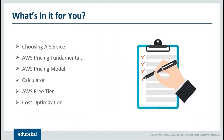Firstly, I would be talking about how does one go ahead and choose a proper service. Then I would talk about different pricing fundamentals and pricing models that AWS has to offer. We would also discuss different AWS calculators and the free tier of AWS. Finally, I would finish things off with the cost optimization part. So let's get started.